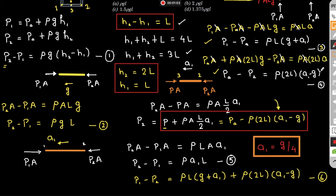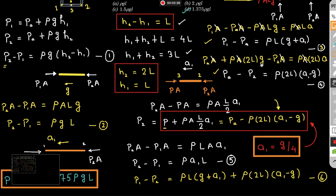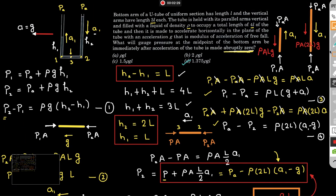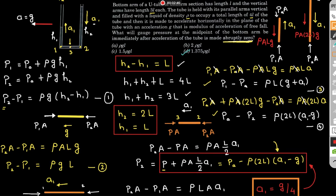Now that we know the liquid's acceleration inside the tube is g/4, we substitute it back into the pressure expression. Plugging in a1 = g/4 gives the total pressure p = atmospheric pressure + 1.375ρgl. Since the question asks for gauge pressure, we subtract atmospheric pressure, so the gauge pressure is 1.375ρgl. The answer is option D.